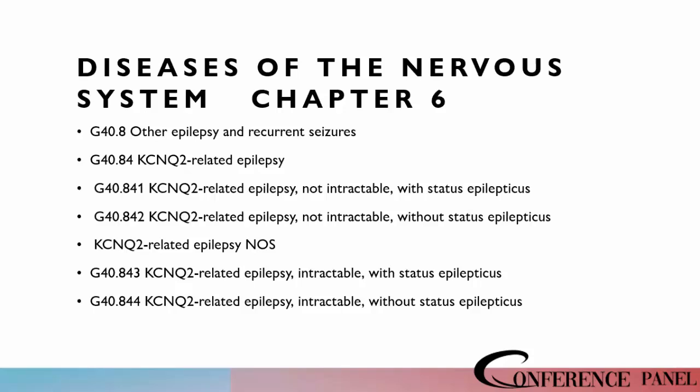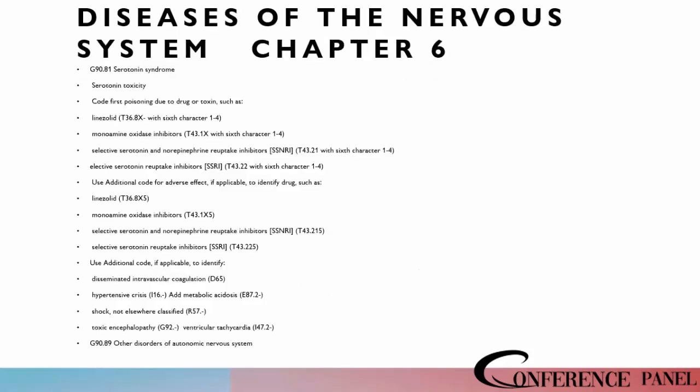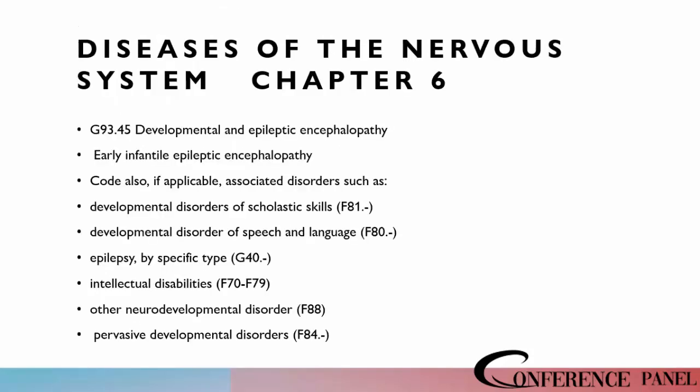Moving on to chapter six, diseases of the nervous system. We've got some new codes that are going to be applicable to epilepsy, and those will be in the G40.8 category. We have a lot still in chapter six, including new codes related to developmental and epileptic encephalopathy.